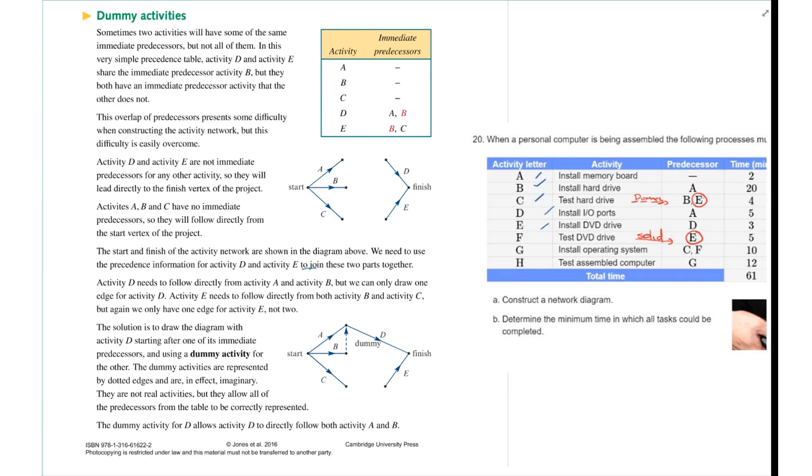Okay, so following along from the previous video where we talked about predecessor tables, what we're looking at is dummy activities. We're going to learn about dummy activities through the predecessor table, and then I'll talk a little bit about how that works into critical path.